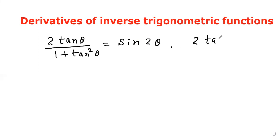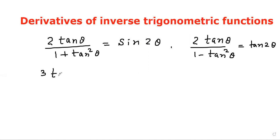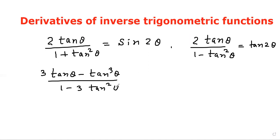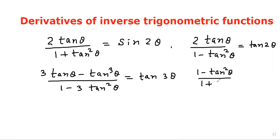Also, 2 tan θ divided by 1 minus tan² θ is equal to tan 2θ. And 3 tan θ minus tan³ θ divided by 1 minus 3 tan² θ equals tan 3θ. Finally, 1 minus tan² θ divided by 1 plus tan² θ equals cos 2θ.